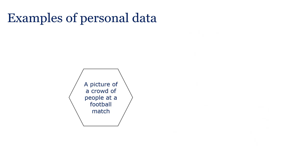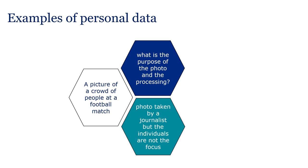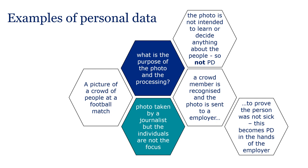Let's now come back to photos and explore these in a little more detail. We've said we need to consider the context of the personal data, and this is relevant when thinking about a picture of a crowd at a football match. The purpose of the photograph and its processing is relevant. If a crowd of people at a football match are photographed by a journalist, the individuals caught in the photo are not its focus — it is not intended that the photo will be used to learn or decide anything about them, and so it is not personal data. However, if one of the crowd members is recognised by a work colleague who then sends the photograph to their employer to prove that the person is not sick, the employer will be processing the photograph as personal data. The context of the data is really important. Don't forget the guidance if you need help — it covers the key issues and contains lots of really useful examples.